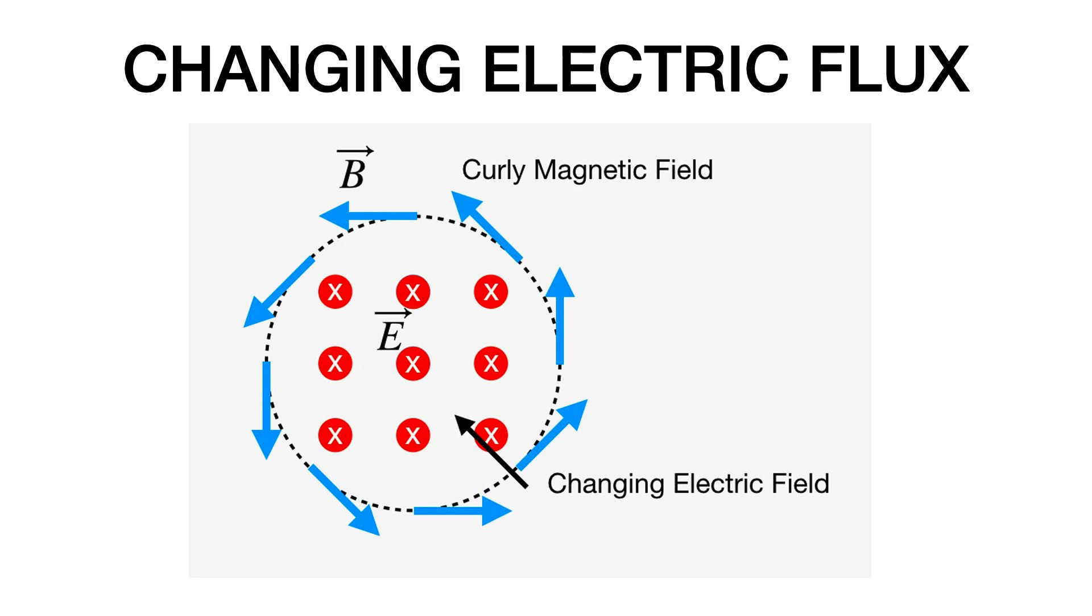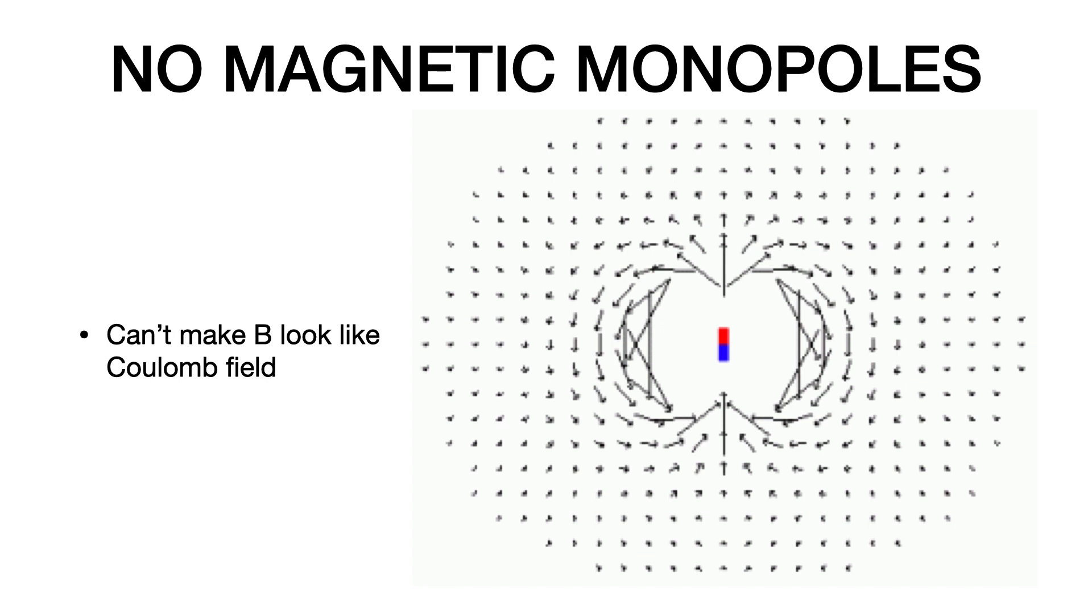Now we have one more rule. This one other rule is that there are no magnetic monopoles. Here's a map of a magnetic field due to a bar magnet, it's a dipole. You get this pattern of field in space. It doesn't look quite the same as the Coulomb field due to a single electric charge. This looks like the Coulomb field due to two charges.